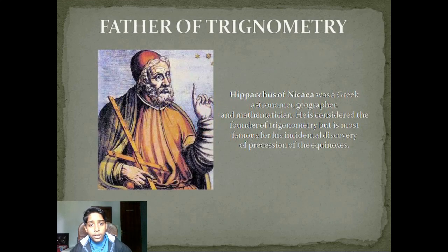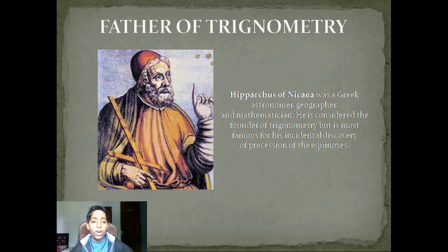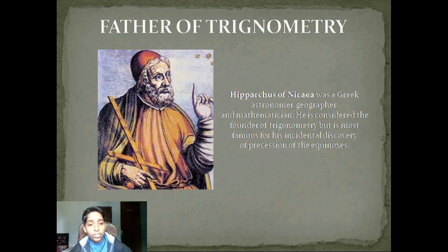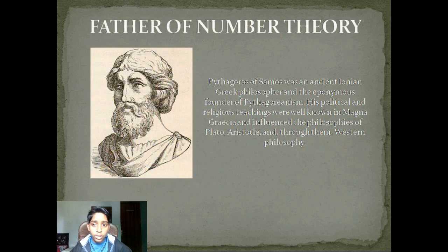The father of trigonometry is Hipparchus of Nicaea. He was a Greek astronomer, geographer, and mathematician. He is considered the founder of trigonometry but is most famous for his incidental discovery of the precession of equinoxes.